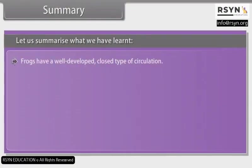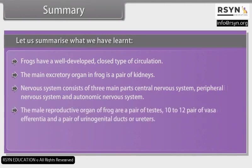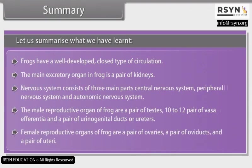Frogs have a well-developed closed type of circulation. The main excretory organ in frog is a pair of kidneys. The nervous system consists of three main parts: central nervous system, peripheral nervous system and autonomic nervous system. The male reproductive organs of frog are a pair of testes, 10–12 pairs of vasa afferentia and a pair of urogenital ducts or ureters. The female reproductive organs of frog are a pair of ovaries, a pair of oviducts and a pair of uteri.